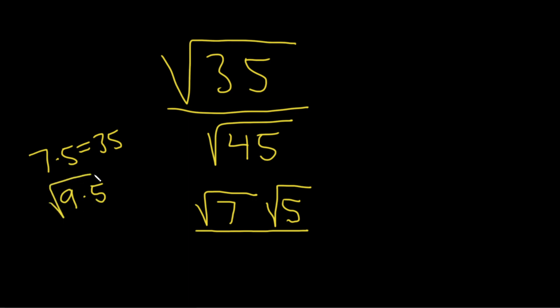So 45 is 5 times 9 or 9 times 5. So this is the square root of 9 times the square root of 5. And the square root of 9 is a number that we know it's 3. So this is 3 square root of 5. So we just replace the square root of 45, which is 9 times 5, with 3 square root of 5.